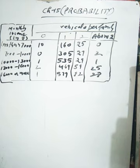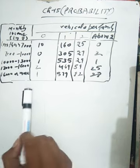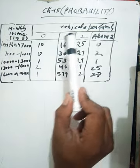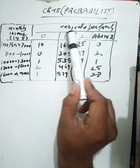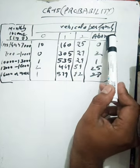Information is given in this table: monthly income versus the number of vehicles - 0, 1, 2, and above 2.